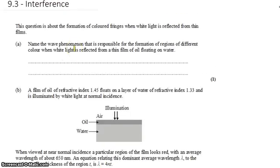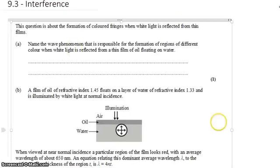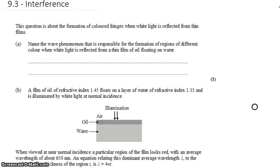Name the phenomenon that's responsible for the formation of regions of different color when white light is reflected from a thin film. Well, before I give you the answer to that, let's quickly take a look at why we get different colors from thin films. So here's a layer of oil on top of a layer of water.